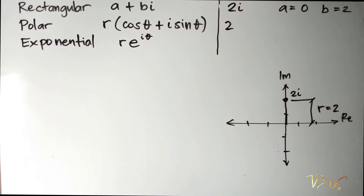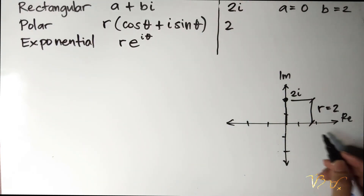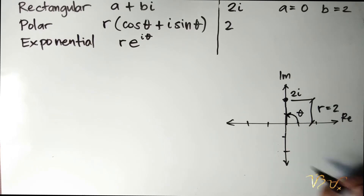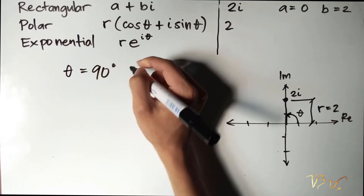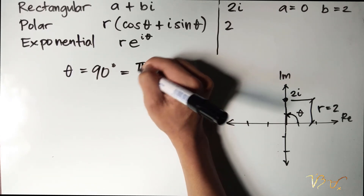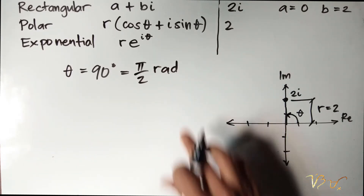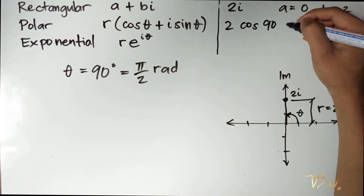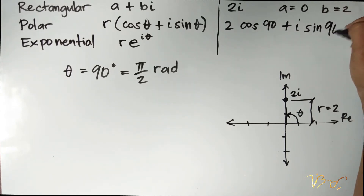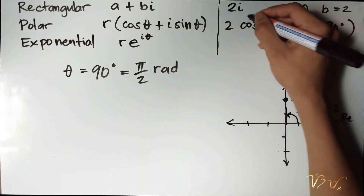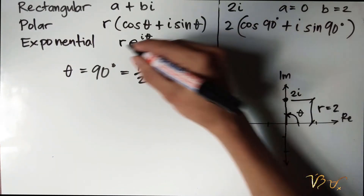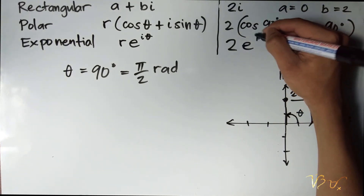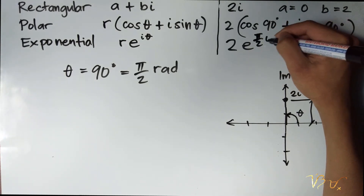Our problem now is theta. Theta is always taken from the positive real axis, and that angle is 90 degrees. Theta equals 90 degrees, or pi over 2 radians. In its polar form, that would be 2 times (cosine 90 degrees plus i sine 90 degrees). In its exponential form, we have 2 times e raised to i times pi over 2.